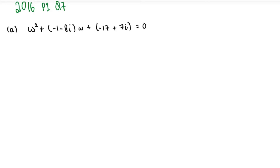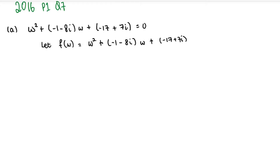We let f(w) = w² + (−1 − 8i)w + (−17 + 7i). To verify, we substitute w = −1 + 5i. So we compute f(−1 + 5i), substituting this root value into all the w terms of the function.